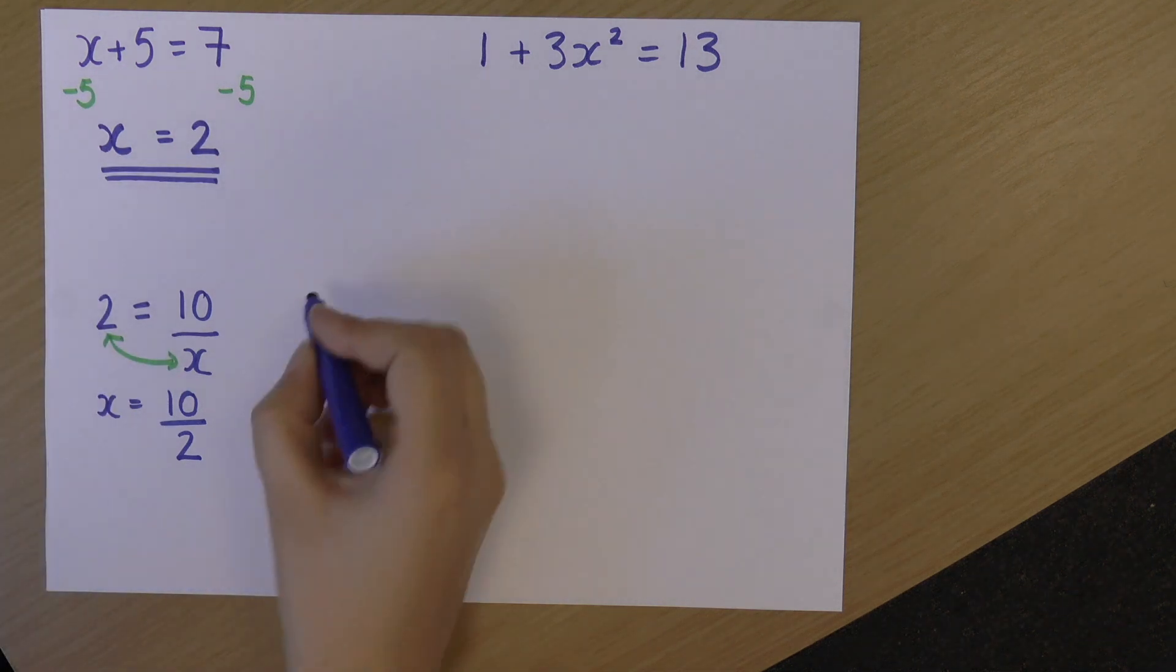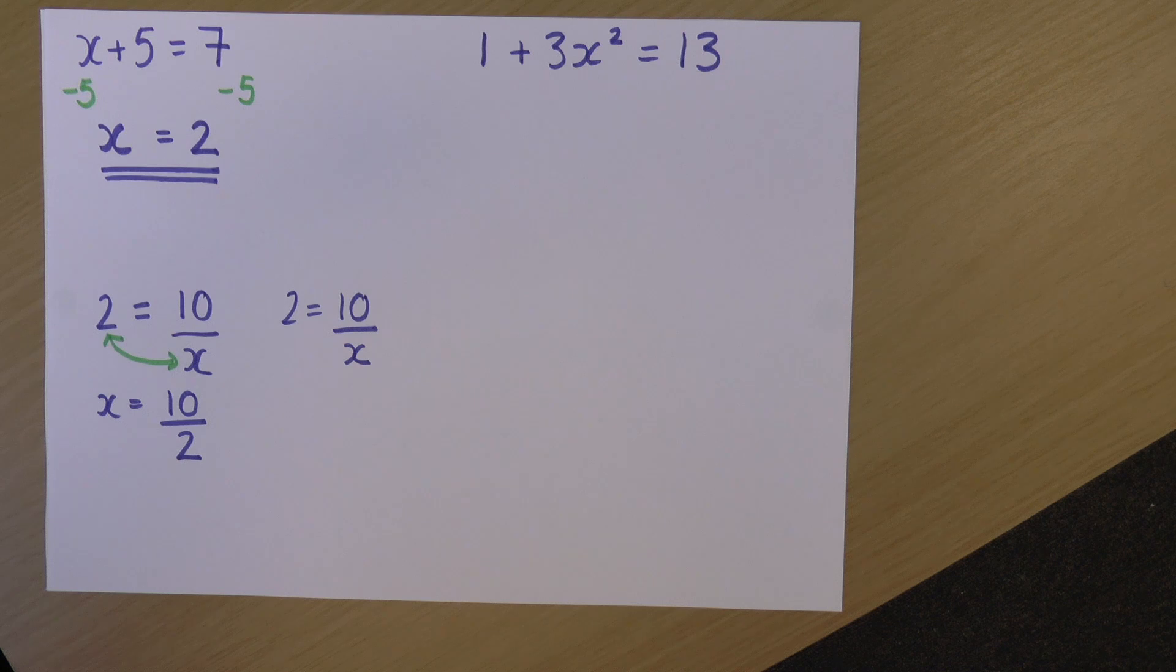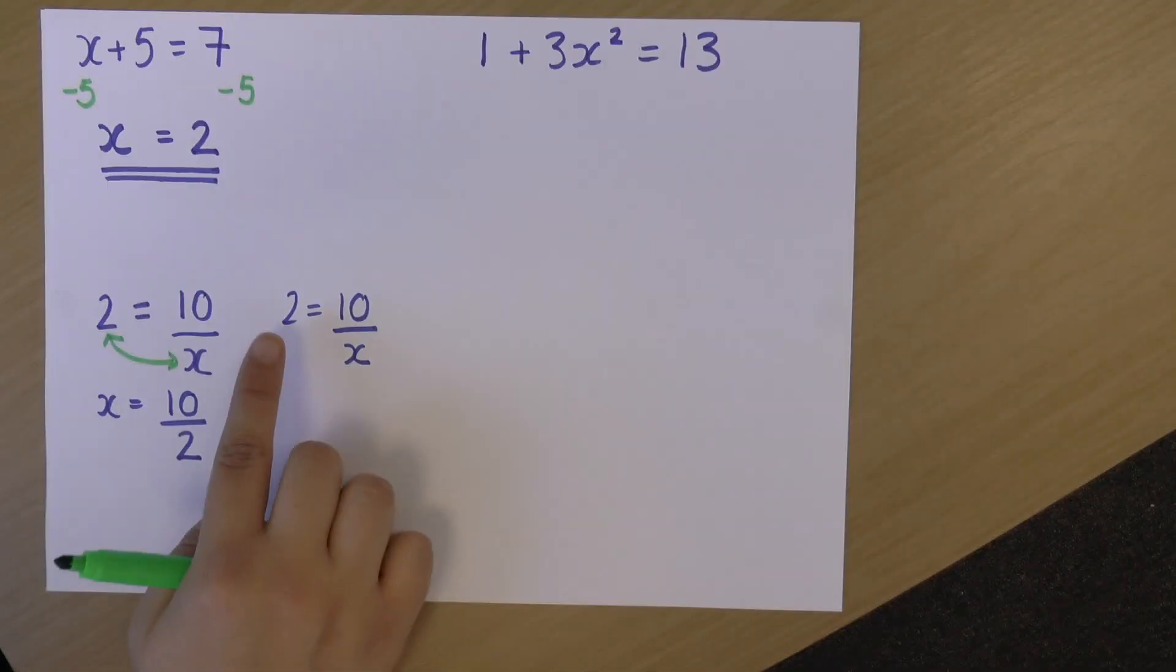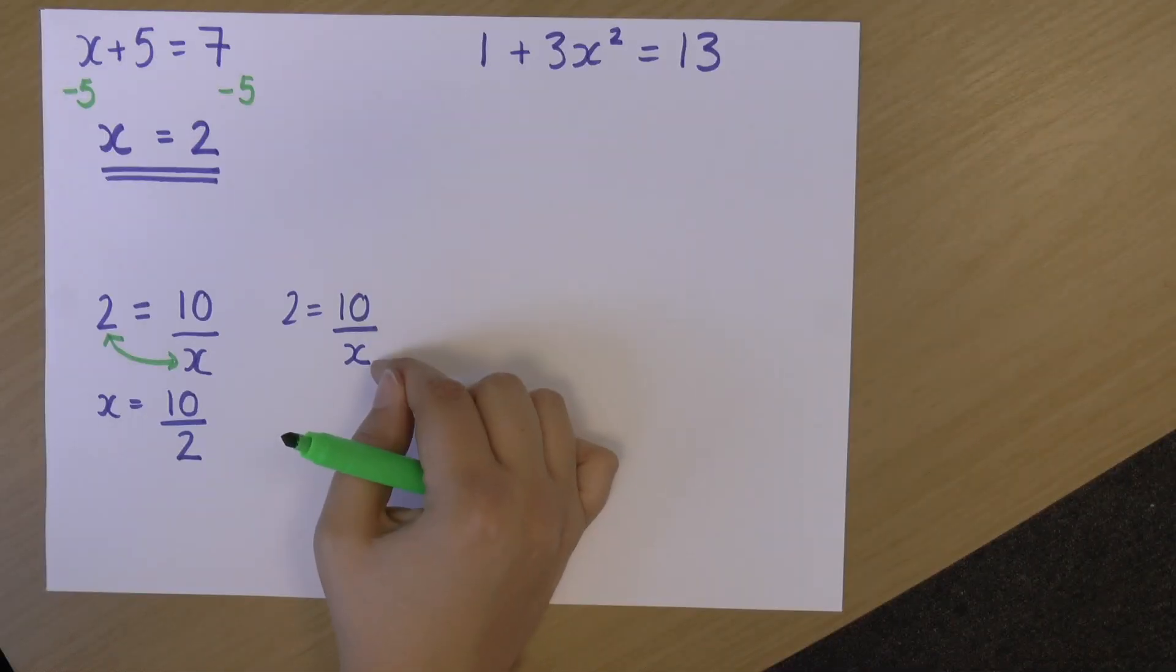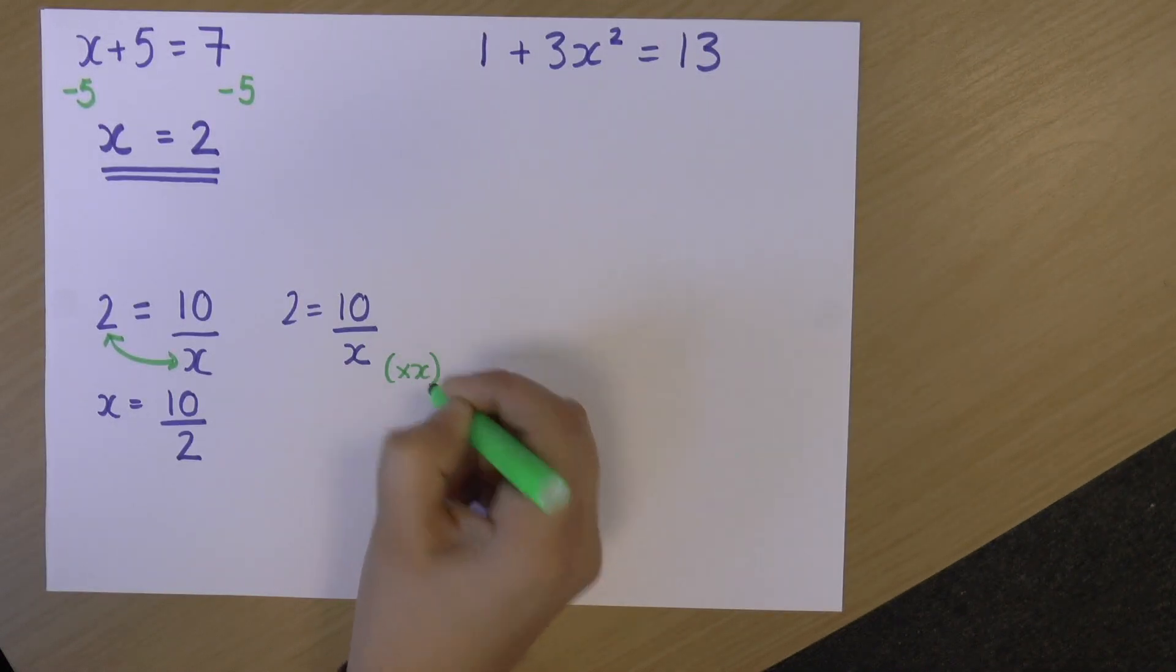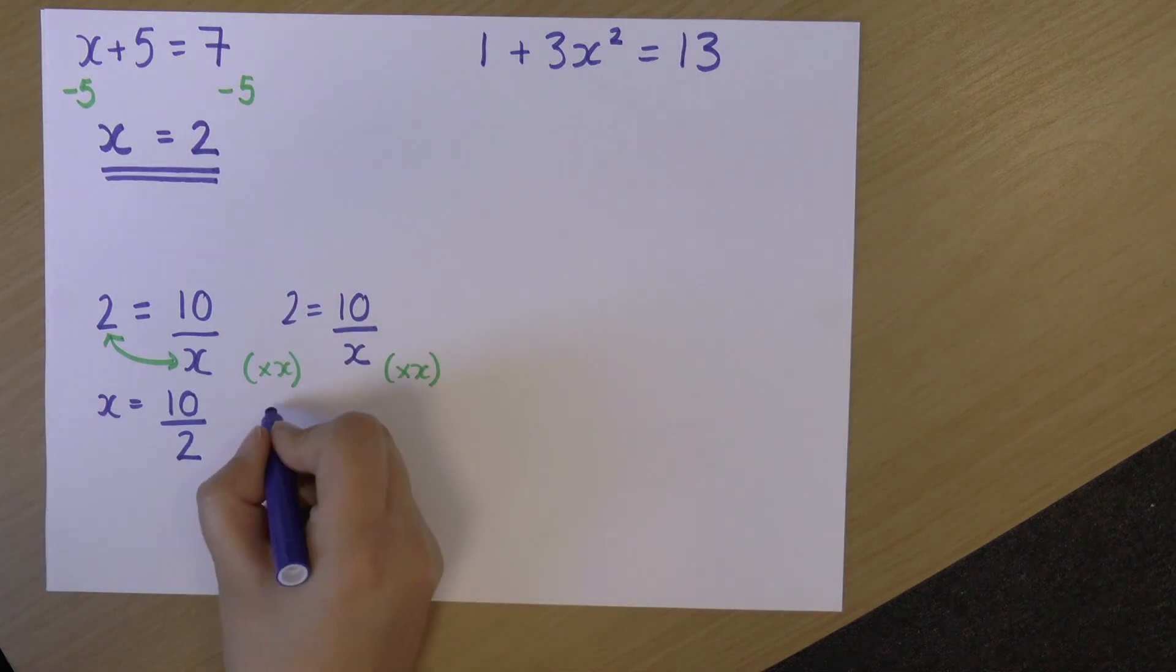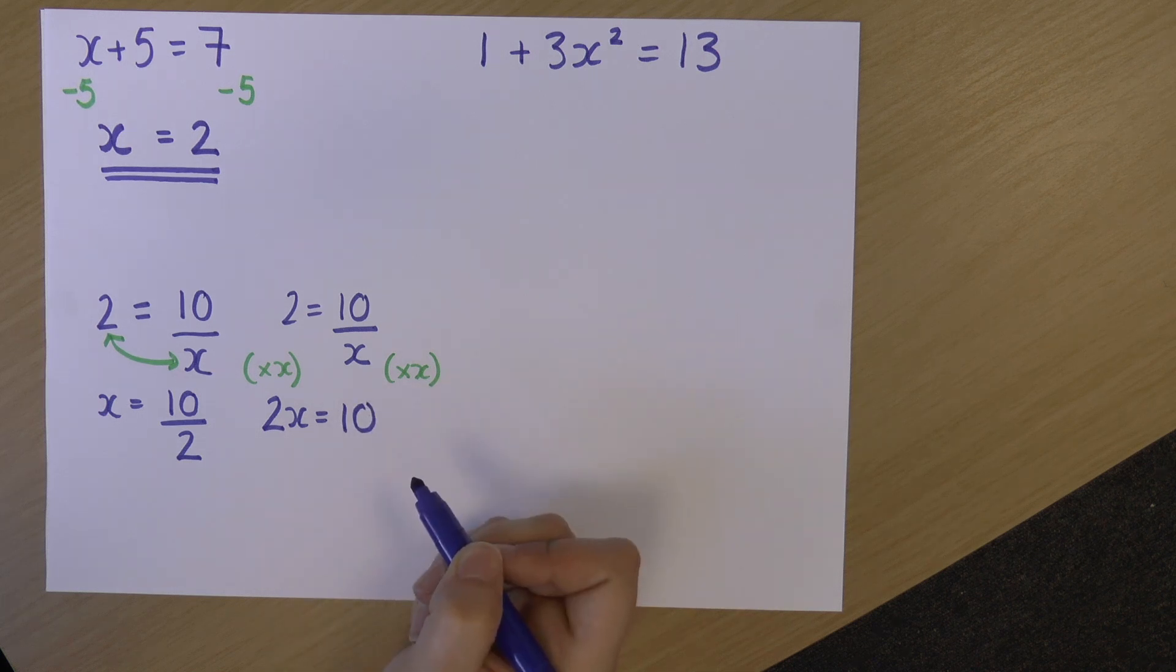So if I've got 2 equals 10 over x again. Now the longer method. I want this x on its own. Now this is difficult to do with it in its current form, so what I want to do is move x over onto the left. So currently, on the right, this is a divide by x. So I want to do the opposite to get rid of it from the right-hand side and move it to the left. So I'm going to multiply both sides by x. And so now on the left, I've got 2 times x, or 2x. And on the right, I've gotten rid of that x. So it's now 10. So I've now got 2x equals 10.